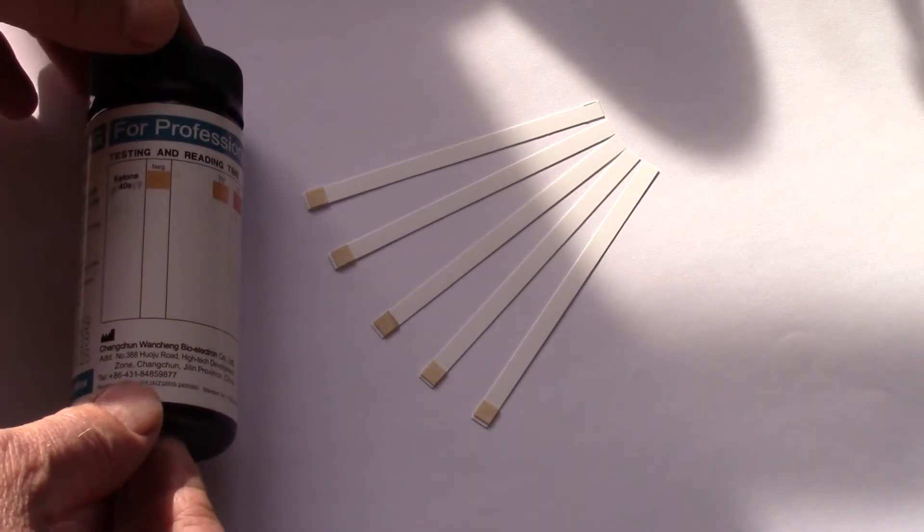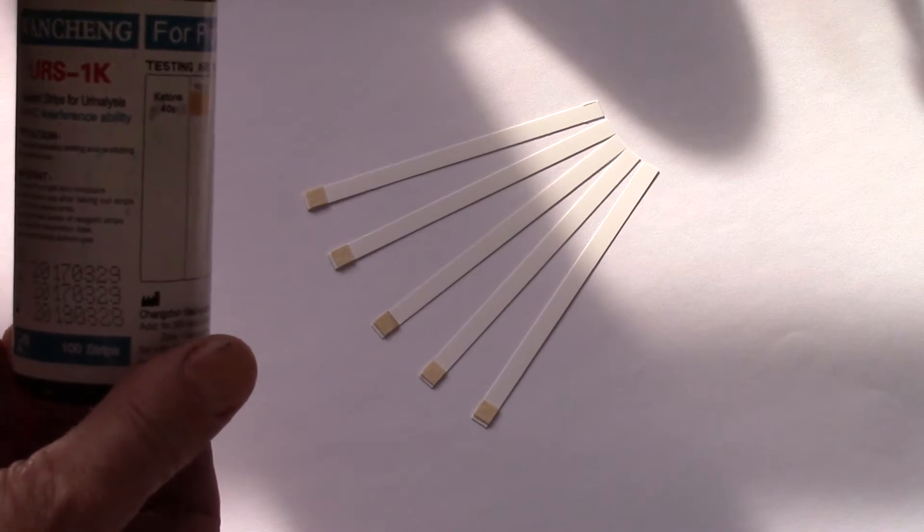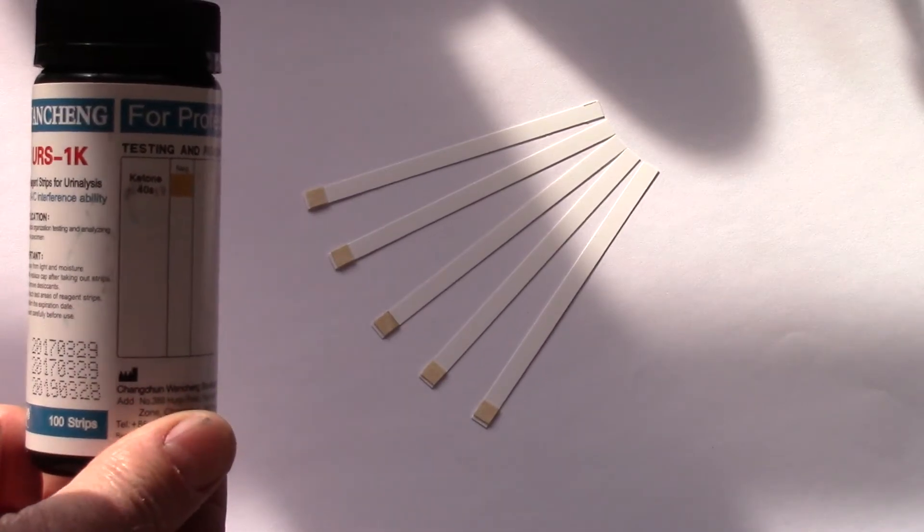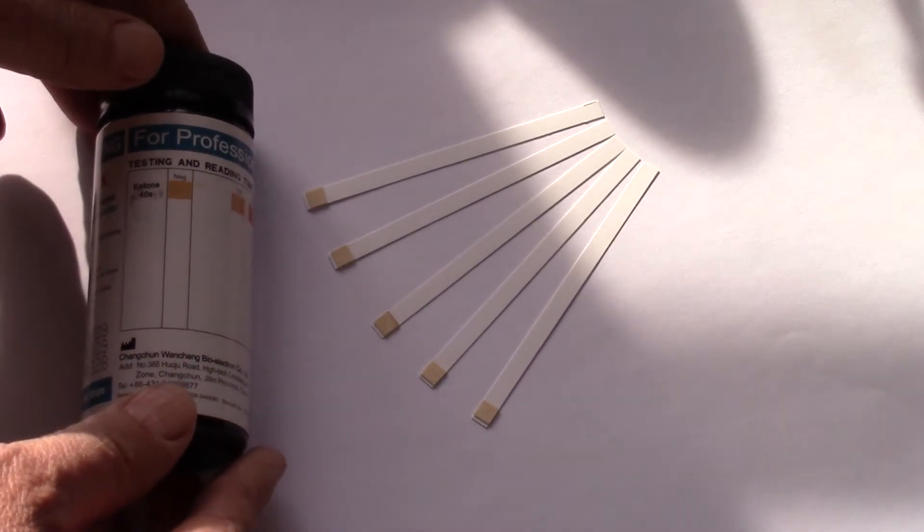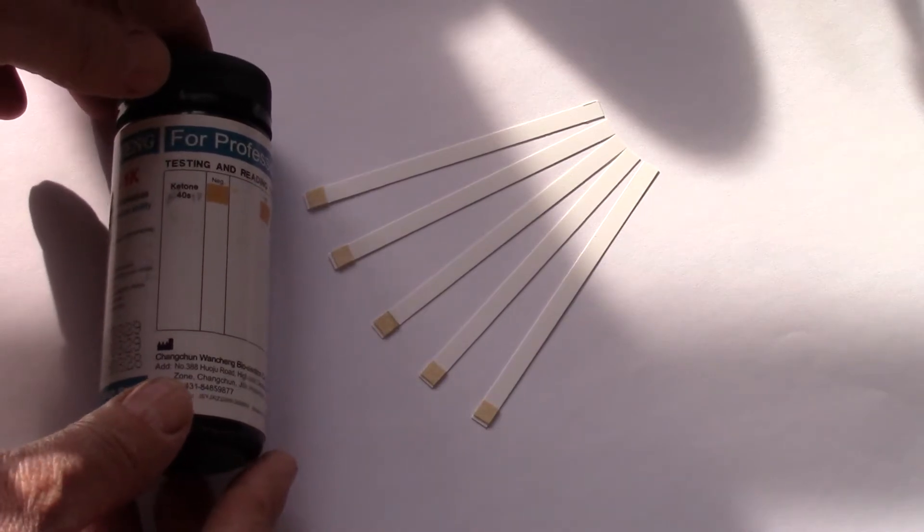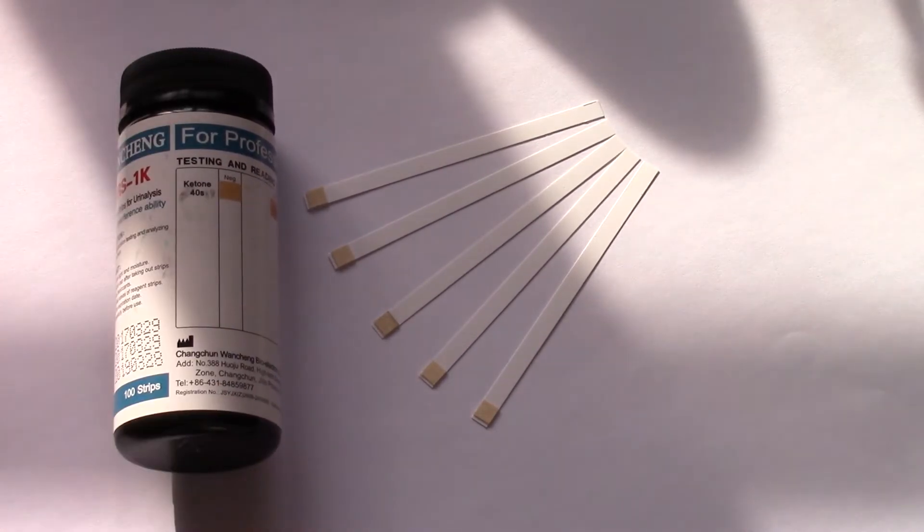Now, testing these is very simple, you open the pot, remove one of the test strips. When you first open the pot, there will be a seal on the pot. This is to prevent the test strips from absorbing atmospheric moisture. Once you break that seal, no matter how long the expiry date is, you've really got about three months to use the contents of that pot.